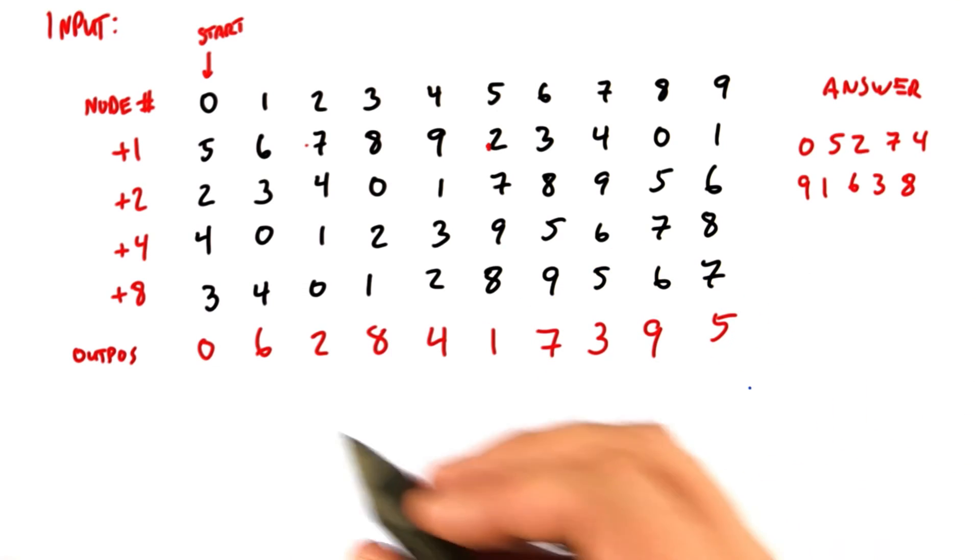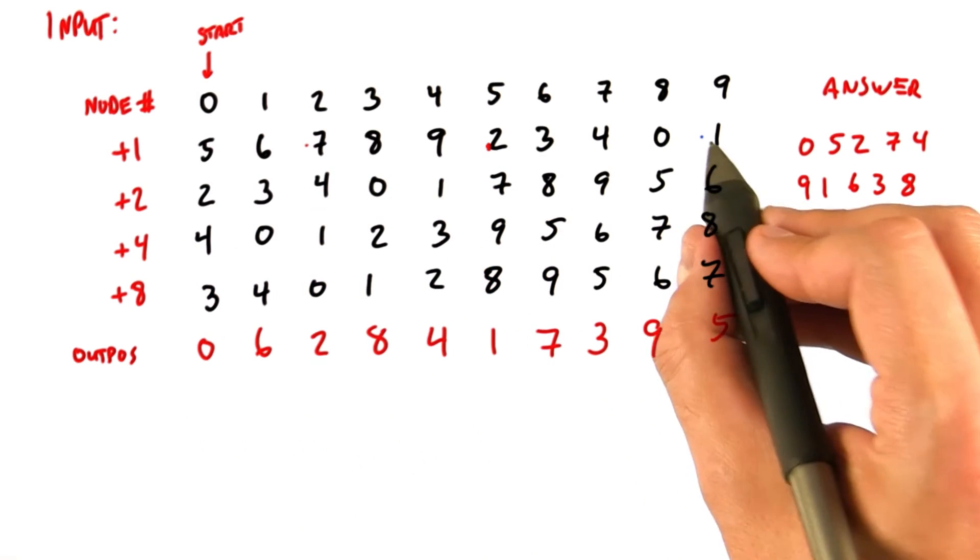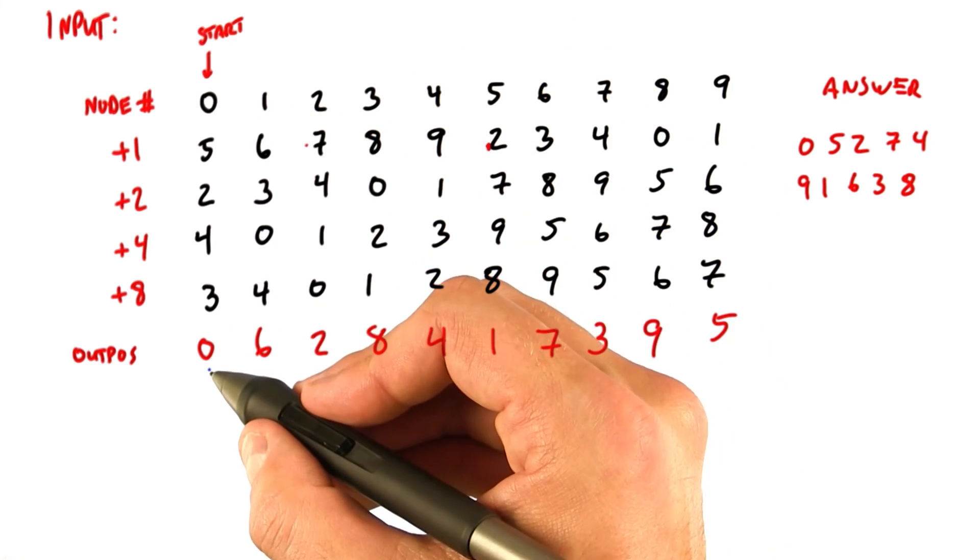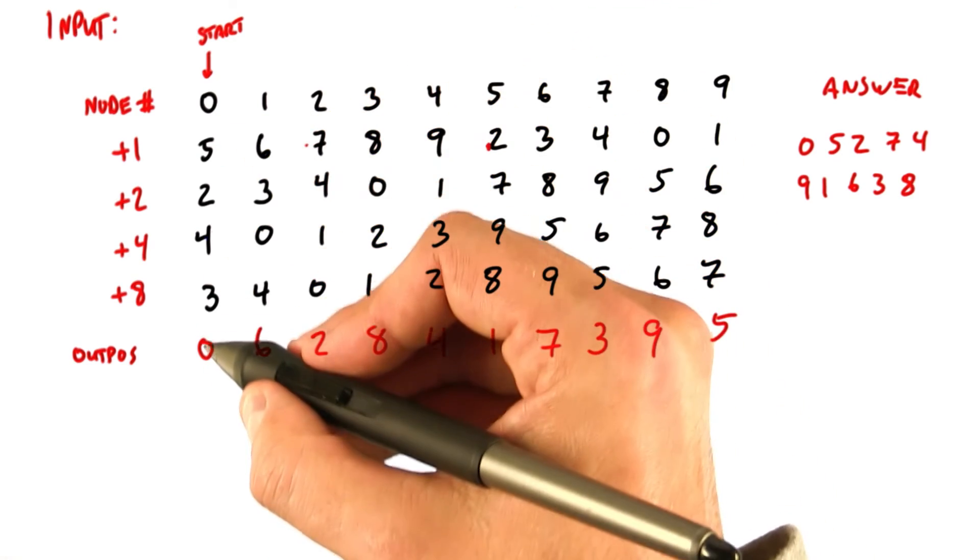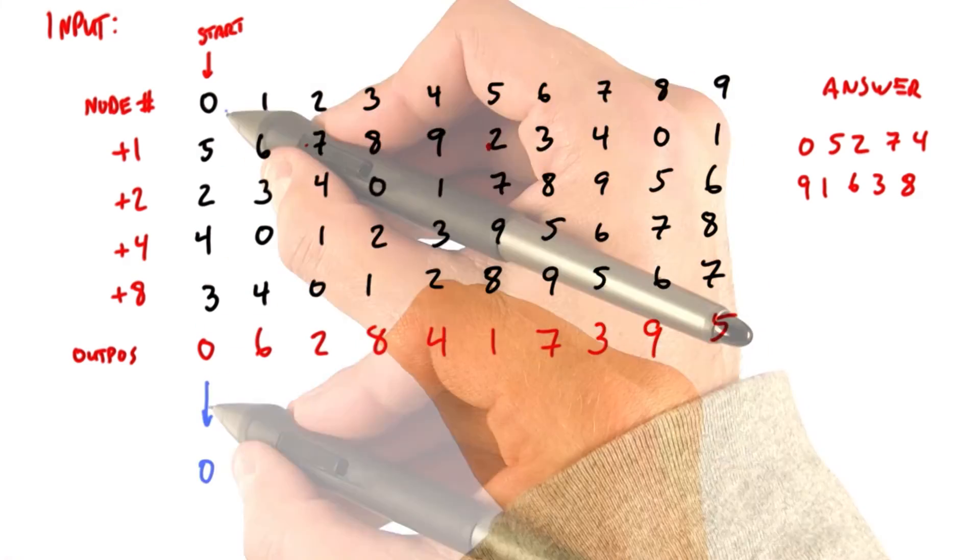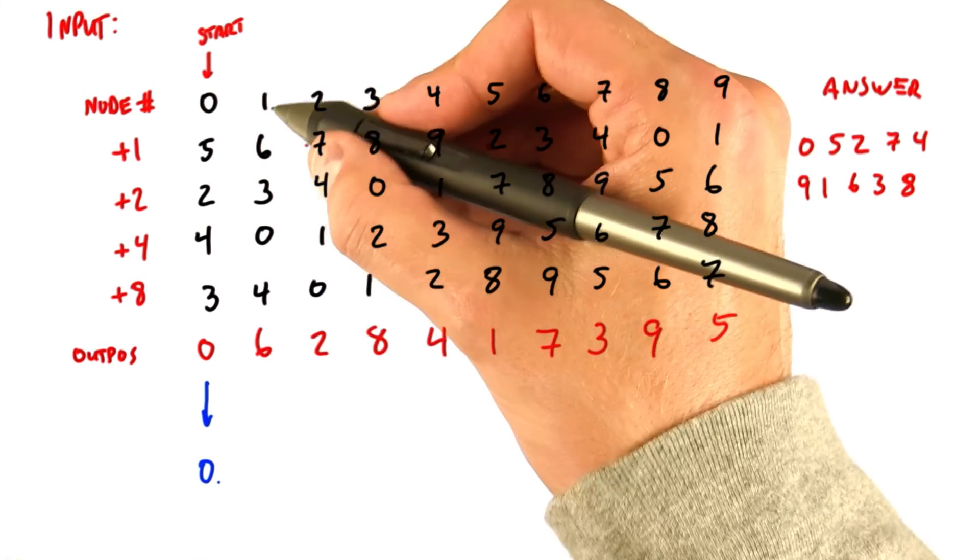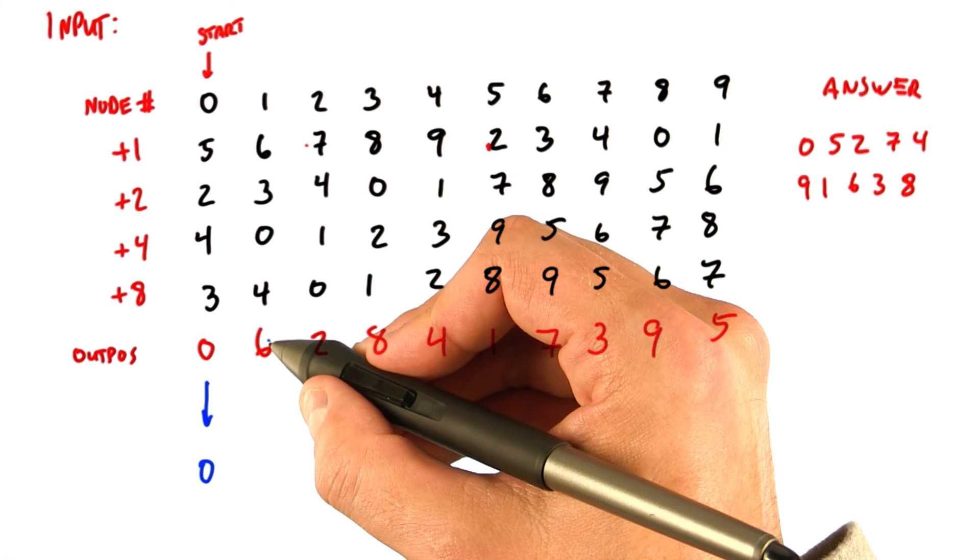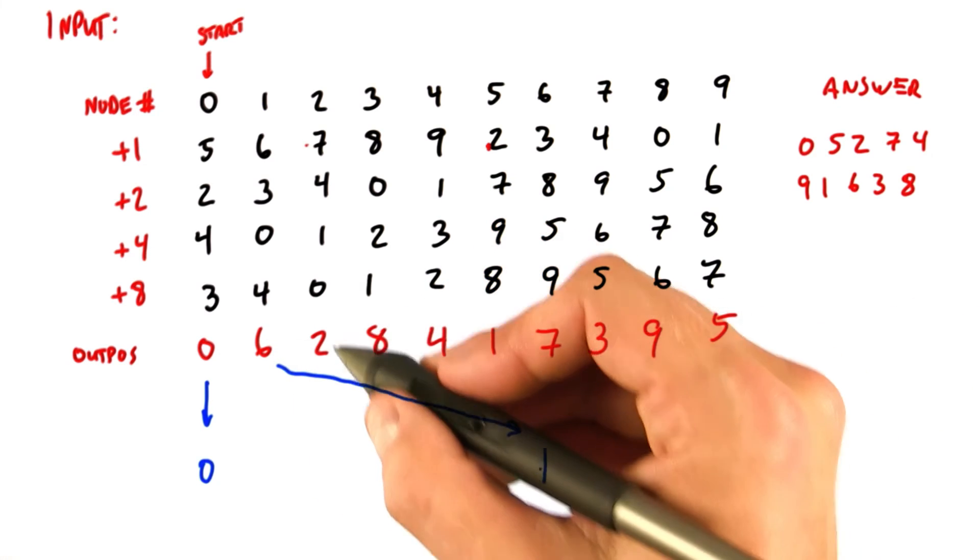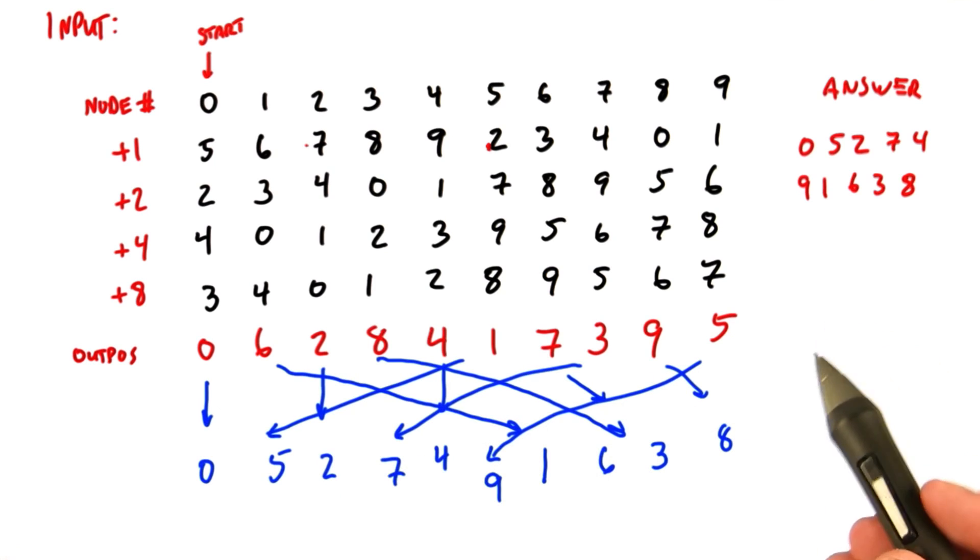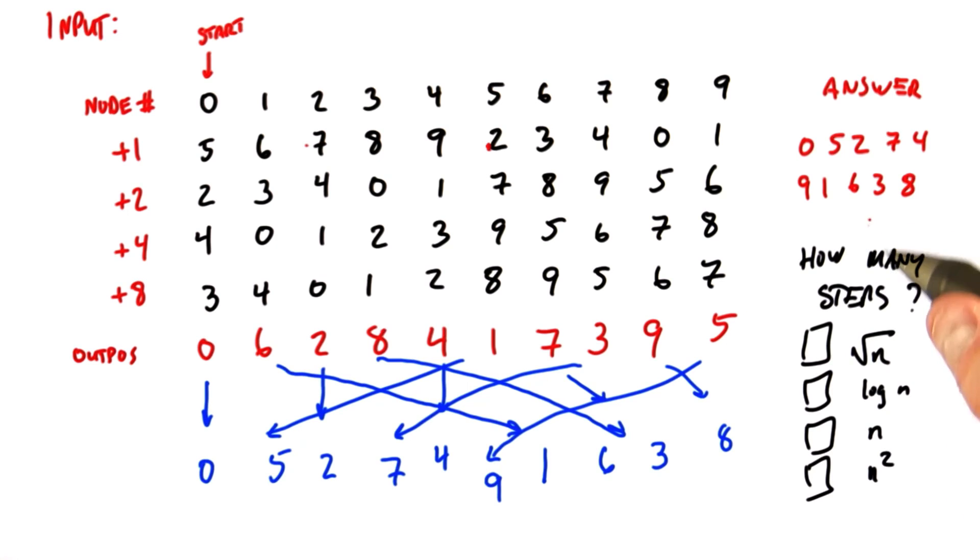So the final step is to use outpause to scatter the nodes to their destinations. So let's see how that works. We're going to start by looking at the first node, and we know that node 0 is going to end up in output position 0. So we will scatter this 0 to output location 0 and write the 0. The next node, node number 1, is going to end up in output position 6. The next node, node 2, will end up directly in output position 2. And so after we do all these scatter operations, we come up with the nodes in the correct order.